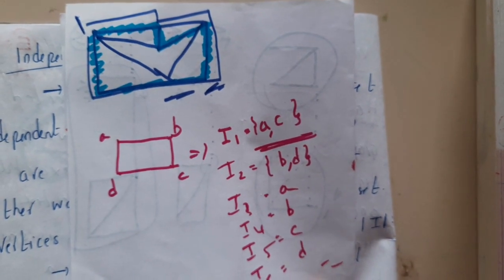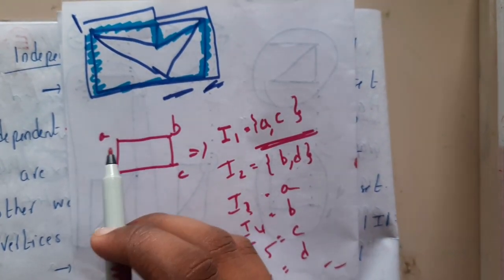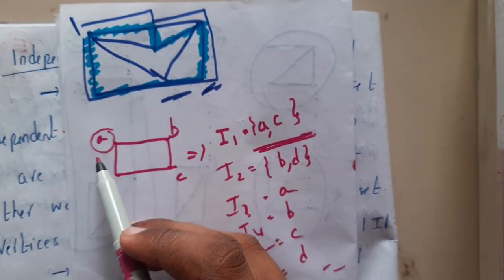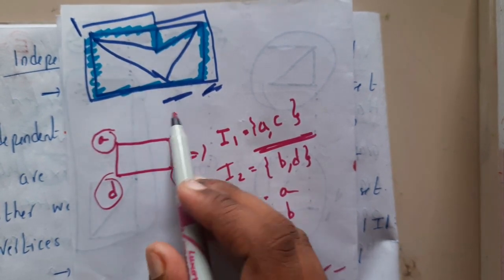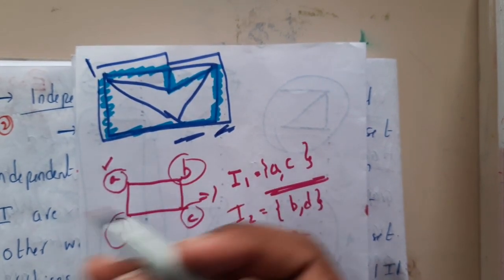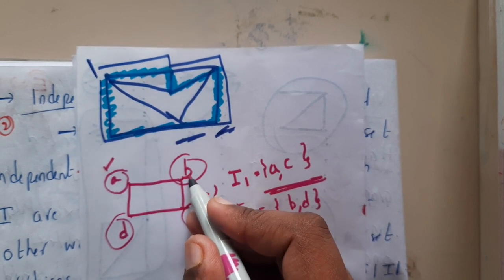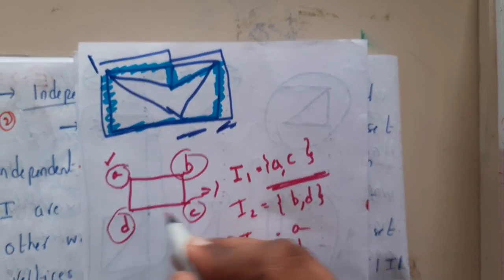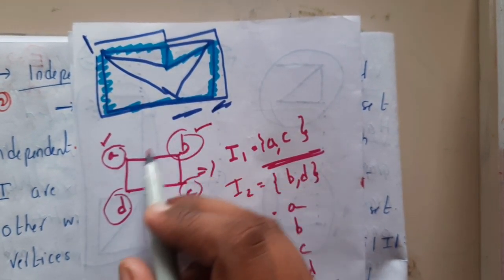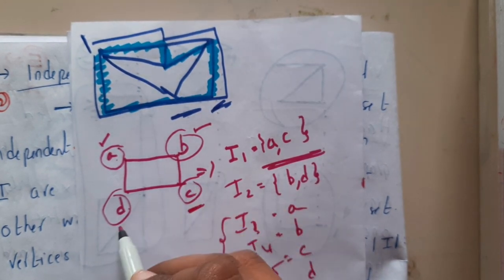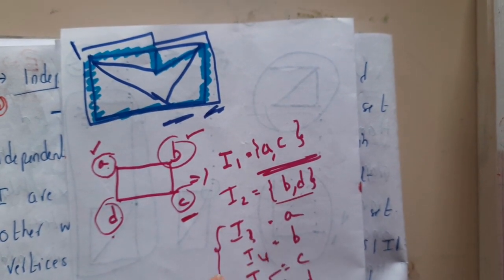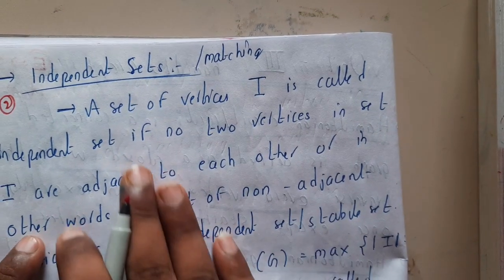The concept of independent set is about selecting non-adjacent vertices. If you select a particular vertex, you should not select its adjacent vertices. So avoiding selection of B and D, the possibility is C — so AC will be an independent set. Similarly, if you select B, you should not select A or C, so you end up at D, making BD an independent set. Basically, an independent set means selecting non-adjacent vertices.